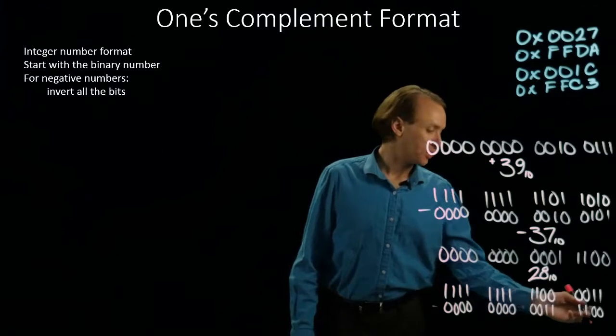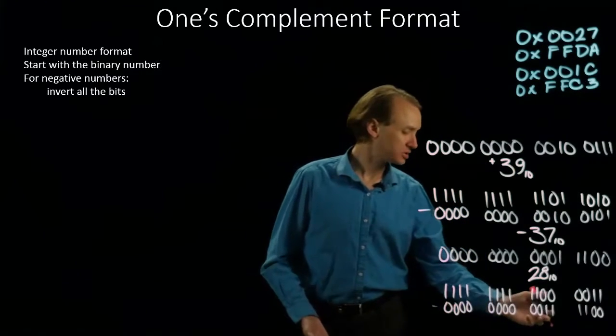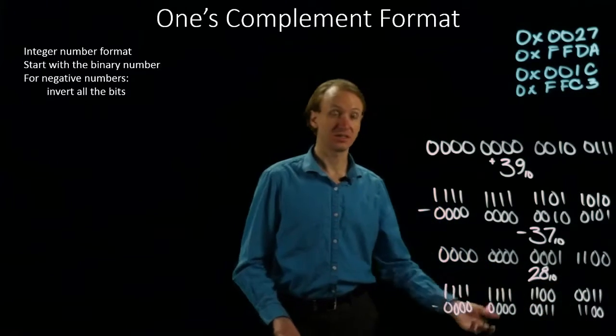Now, I just need to add up the value of these four bits, and I'll know the magnitude. 32 plus 16 gives me 48, plus 8 is 56, plus 4 is 60.